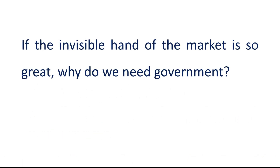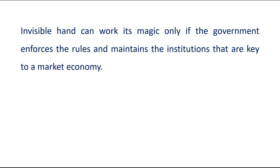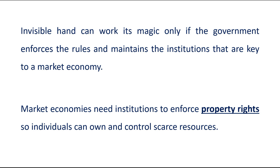If the invisible hand of the market is so great, then why do we need government? The invisible hand can work its magic only if the government enforces the rules and maintains the institutions that are important to a market economy. Market economies need institutions to enforce property rights so that individuals can own and control their scarce resources.